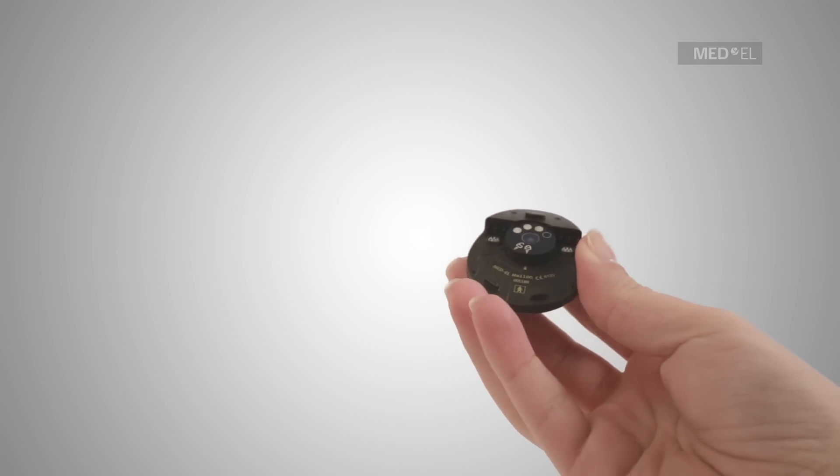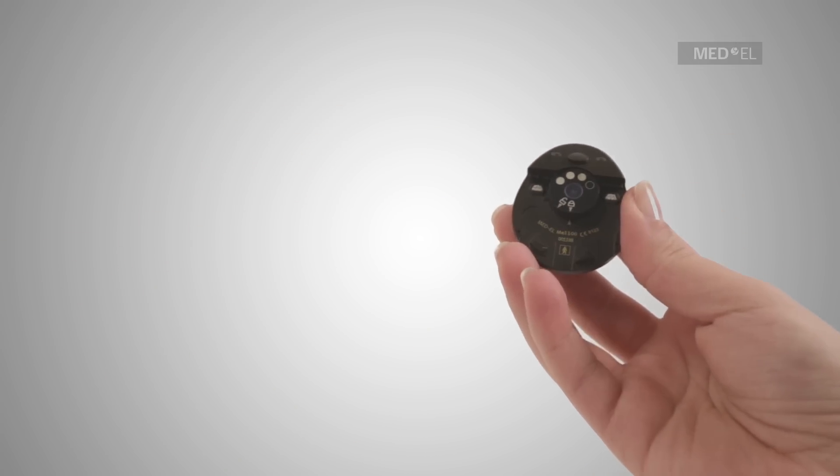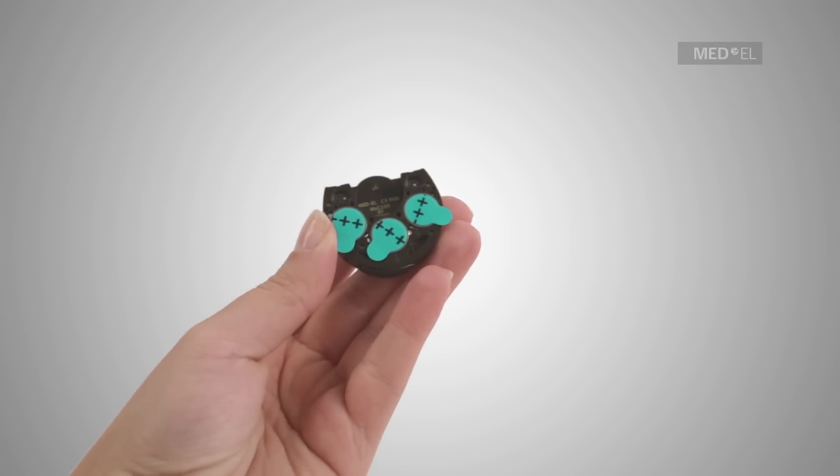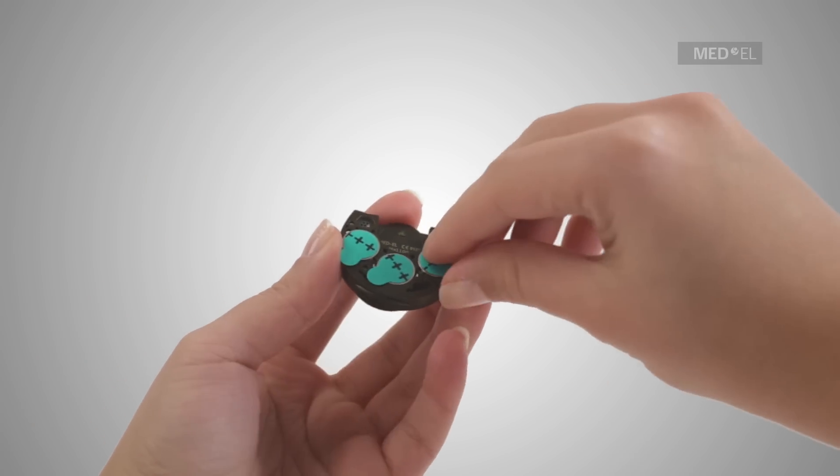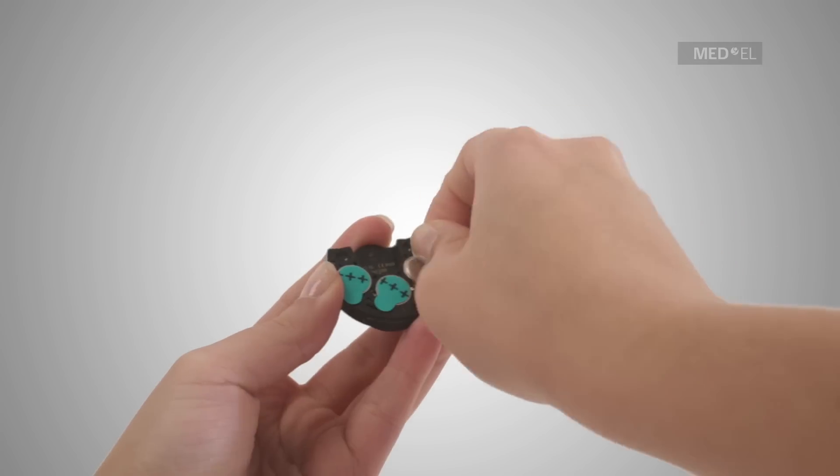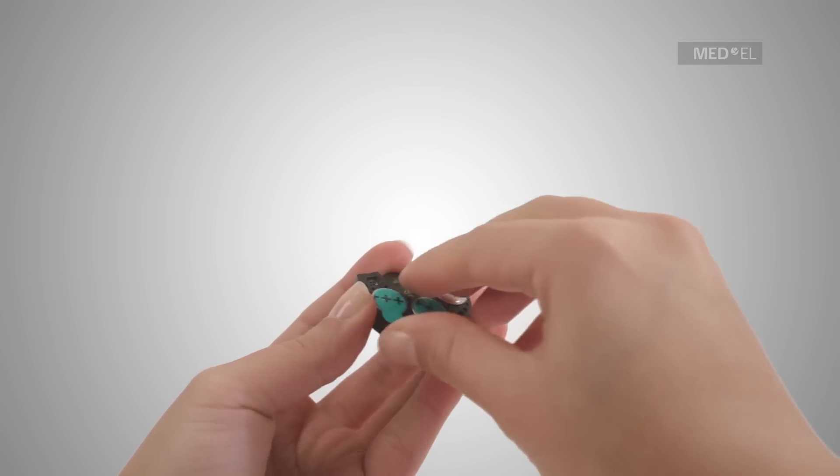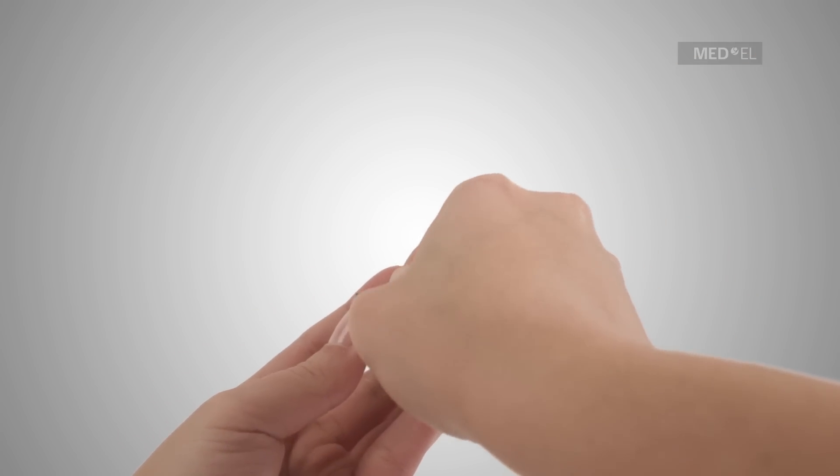The foil covering the zinc air batteries must be removed before use. Ensure that the plus pole is facing outward. When correctly inserted, the plus sign will still be visible after insertion.